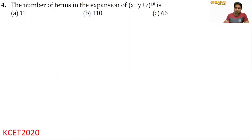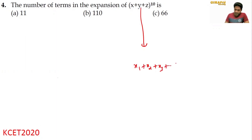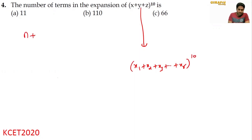No need to use the binomial expansion alone. Directly, if I use the shortcut — if I have X1 plus X2 plus X3 and so on up to XR, that is R number of terms, whole to the power of 10 — then the number of terms shortcut is N plus R minus 1, C R minus 1.